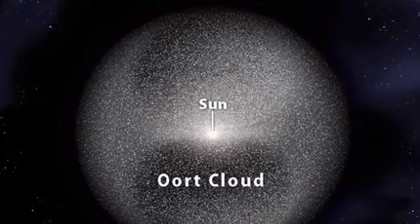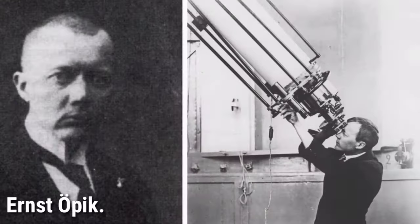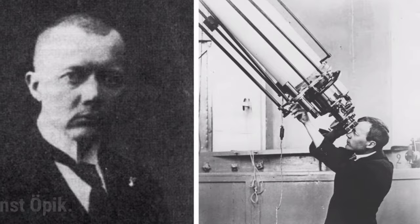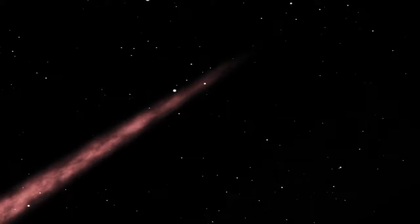The idea of a cloud of icy objects was first proposed in 1932 by Estonian astronomer Ernst Öpik, who postulated that long-period comets originated in an orbiting cloud at the outermost edge of the solar system. In 1950, the concept was resurrected by Jan Oort, who independently hypothesized its existence to explain the behavior of long-period comets that may have originated somewhere as far as 100,000 times Earth's distance from the sun.